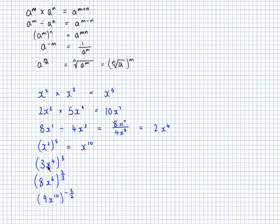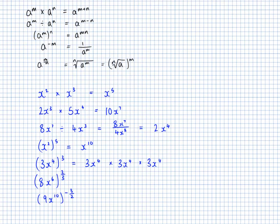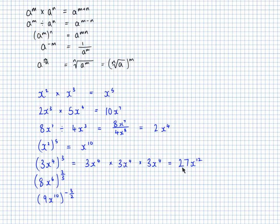This is one where lots of people make mistakes. They write 3x to the 12 — multiplying the powers but not cubing the 3. That needs to happen. Cubing everything in the bracket means 3x to the 4 times 3x to the 4 times 3x to the 4. So 3 times 3 times 3 is 27, and x to the 4 times x to the 4 times x to the 4 is x to the 12. The answer is 27x to the power of 12.